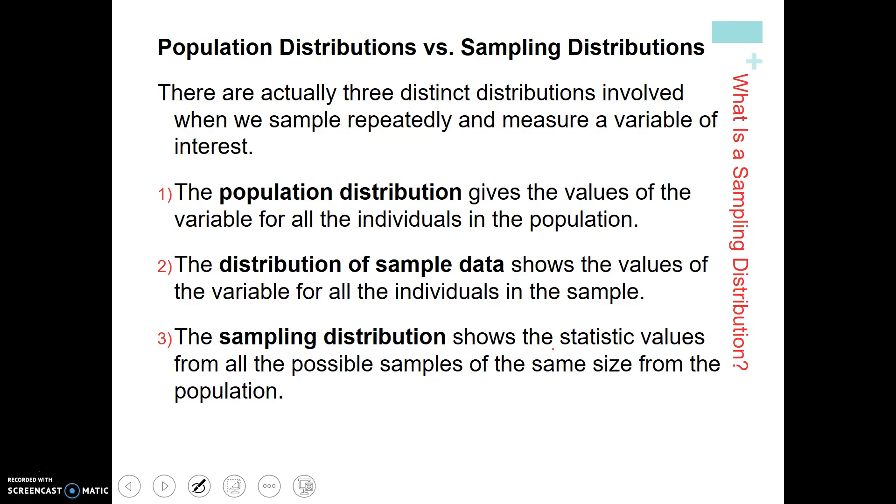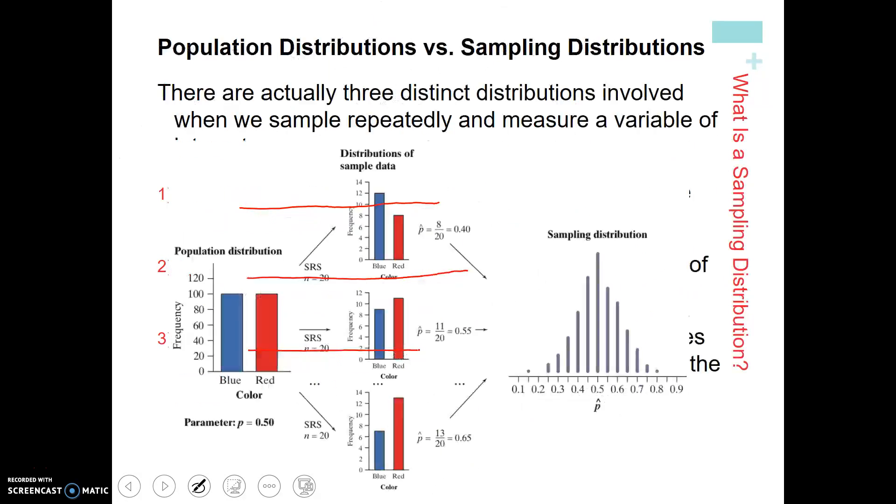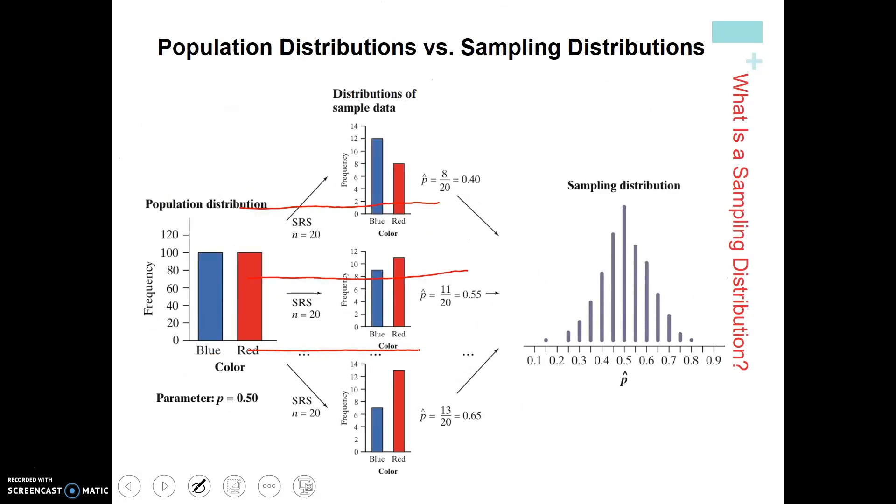So let's get some of these words. The population distribution is the given values of all the individuals in a population, which kind of makes sense. That's everything. The distribution of the sampling data shows the values for all individual samples. So this is every single distribution that we could possibly take. And we said that last time, it's going to look pretty much like the population. So here's probably just a better picture of what kind of goes on with this.